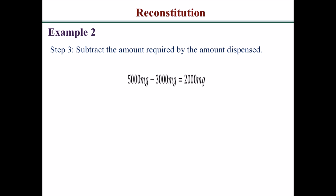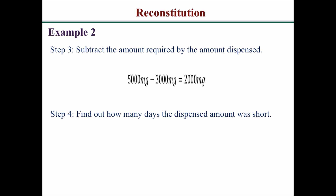Subtract the amount dispensed from the amount required: 5,000 milligrams minus 3,000 milligrams equals 2,000 milligrams short. The final step is to find how many days short that is. The patient takes 250 milligrams two times a day, which is 500 milligrams per day, so you'd be short four days. Thank you.